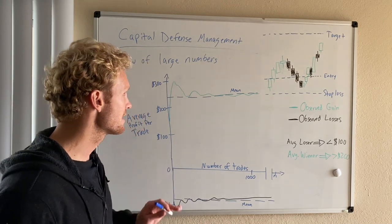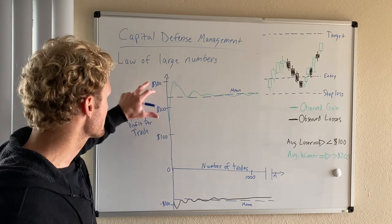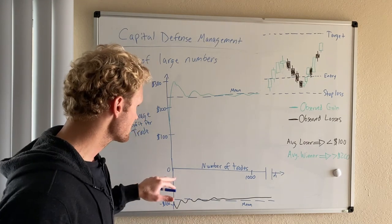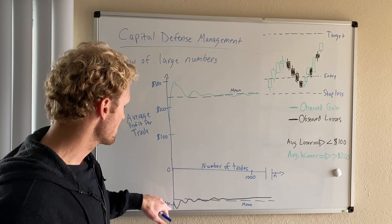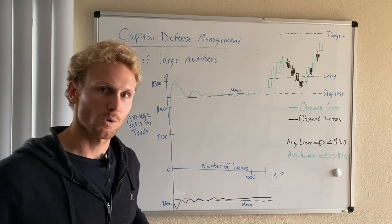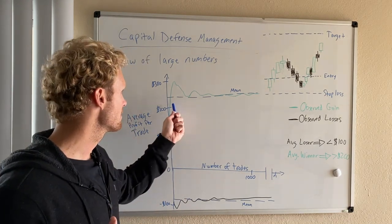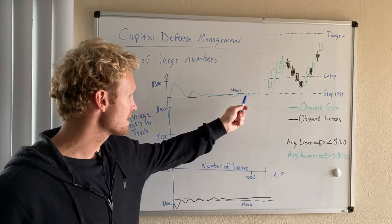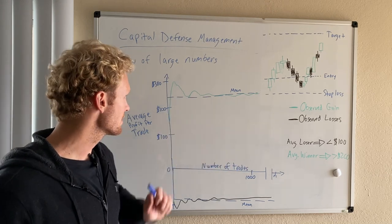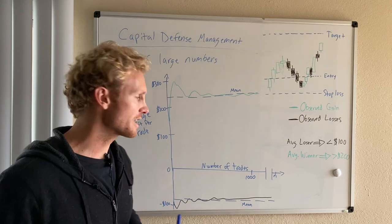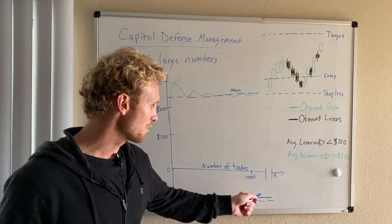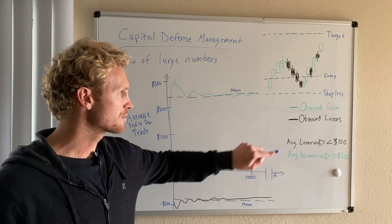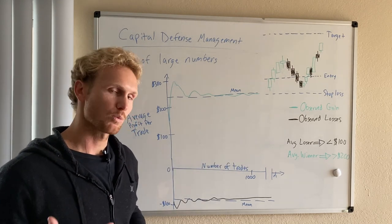We're going to use the casino's strategy in our favor. I have a chart here where the y-axis shows average profit per trade and the x-axis shows the number of trades. You can see the losses down here and I broke it up for losses and gains. The green line is the profit per trade taken, and over time the average ends up being represented by this blue dashed line. For this example, our average winner is greater than two hundred dollars.